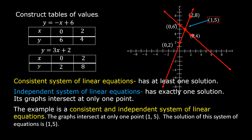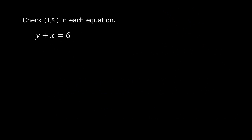The solution of this system of equations is point (1, 5). Let us check point (1, 5) in each equation. The first equation is y plus x is equal to 6. Substitute 1 for x and 5 for y: 5 plus 1 is equal to 6. Six is equal to 6. This is a true numerical statement.